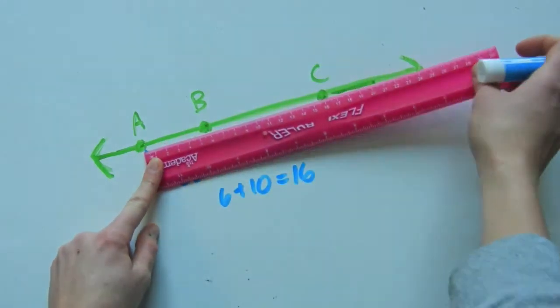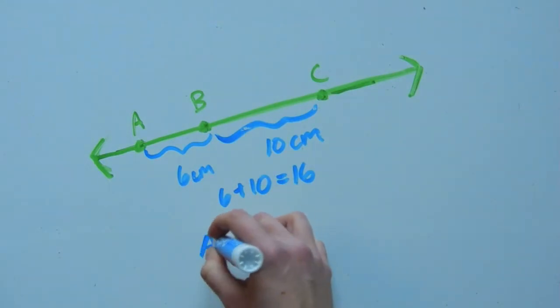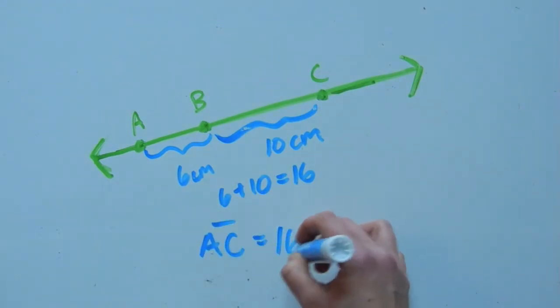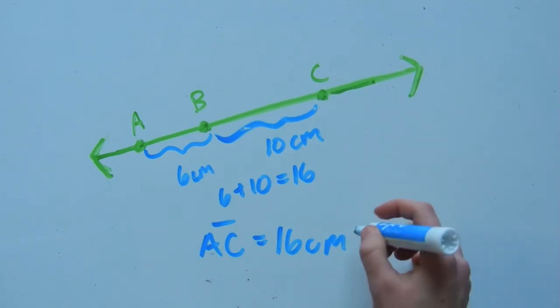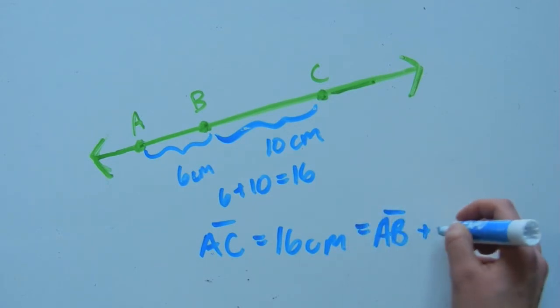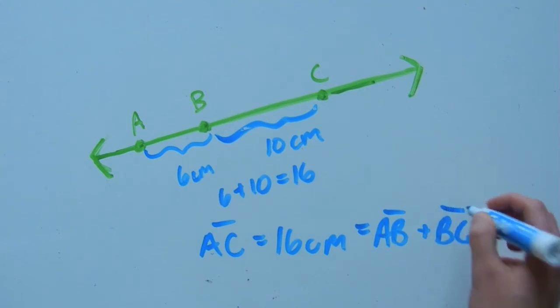Checking on the ruler, yes, AC equals 16 centimeters. And that equals AB plus BC. From this video you will hopefully have a good foundation for understanding the betweenness within a line.